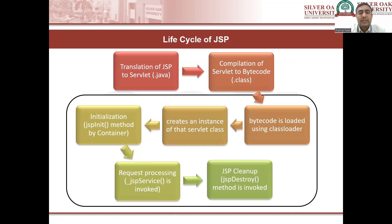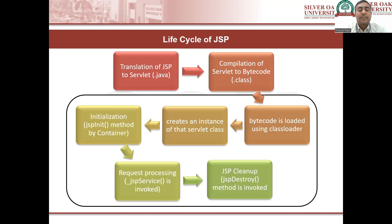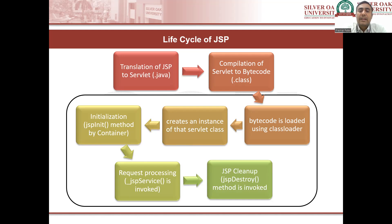In this life cycle, the first step is the translation of JSP to servlet — the web container translates the JSP code into Java code, meaning the .jsp file becomes a .java file. The second step is the compilation of the servlet to bytecode, meaning a .class file. From the second step onward, it is similar to the servlet life cycle. The compiler compiles the Java file into the class file — that is the bytecode.